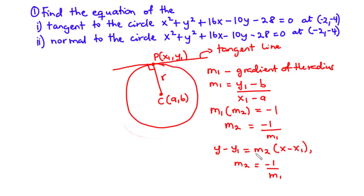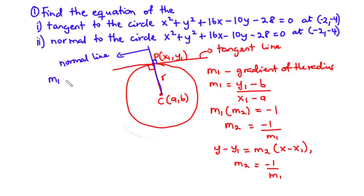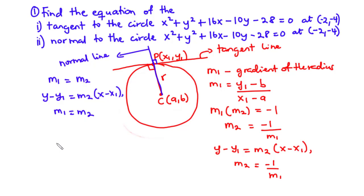To find the equation of the tangent to the circle, it's given by y minus y1 equals M2 times (x minus x1), where M2 equals negative 1 over M1. Now let's talk about the normal. Using this same diagram, the normal is the line that is perpendicular to the tangent line. This normal line passes through the center of the circle. Hence, the gradient of the radius is the same as the gradient of the normal line. In that case, M1 is equal to M2.